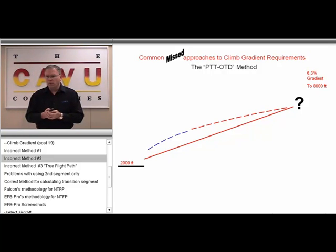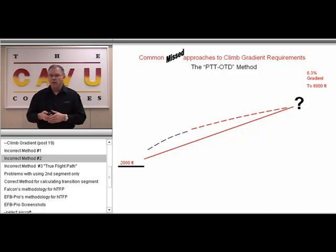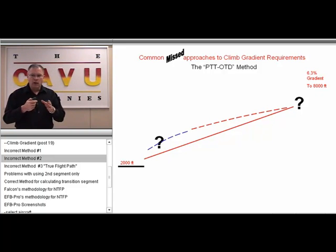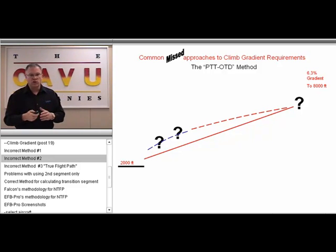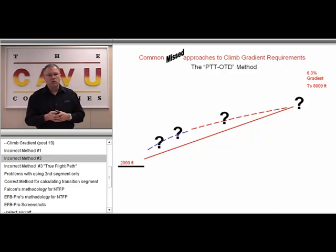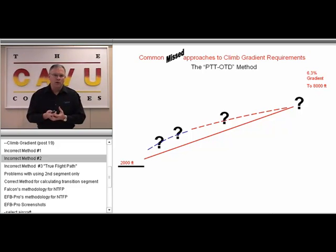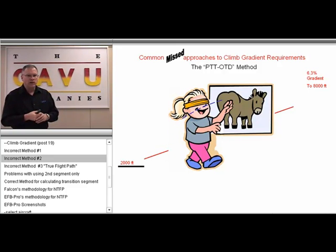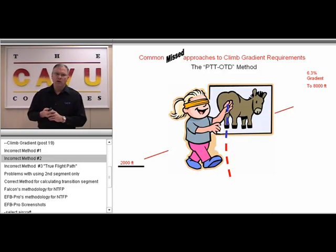We have no data supporting that climb performance measured at 8,000 feet could be interpolated back down to 2,000 feet. We have no idea whether degradation of performance over time equals degradation of performance with altitude — which it does not, but which this method assumes. You're really stretching the limits of assumptions here. You're simply taking your climb rate and pinning it on the proverbial tail on the donkey. This is why we give it the name: the PTTOTD method.